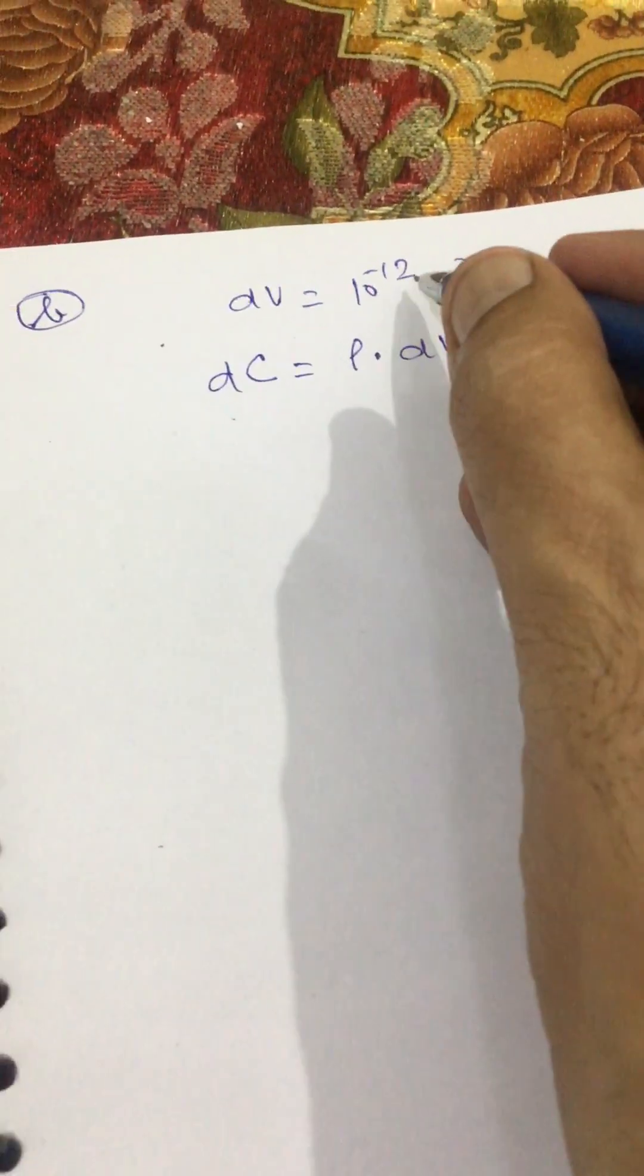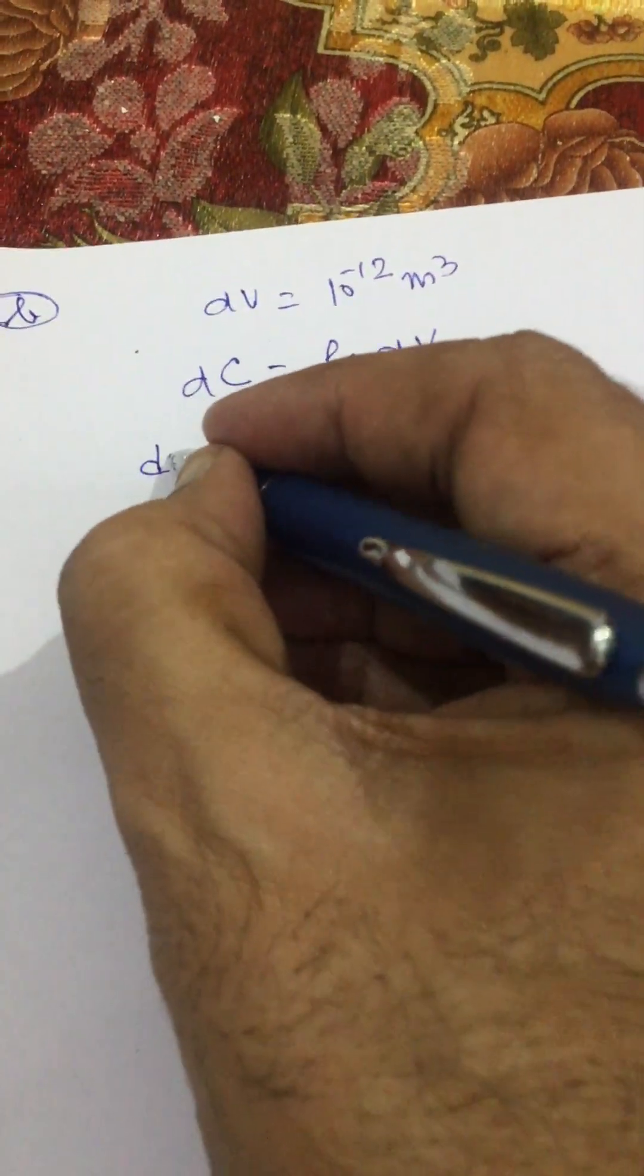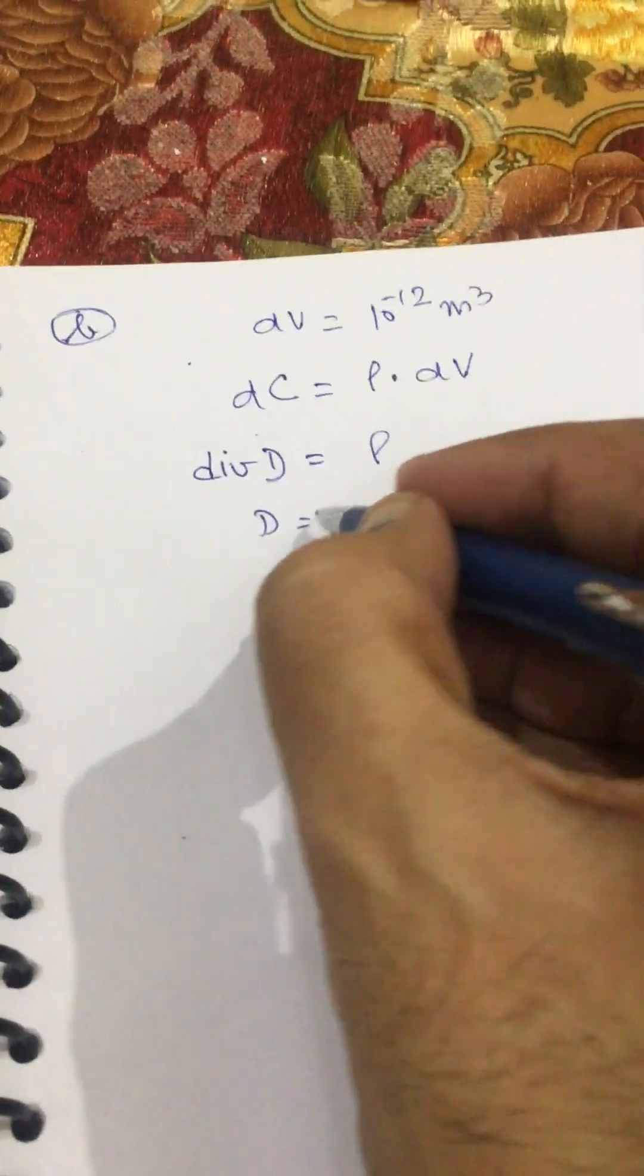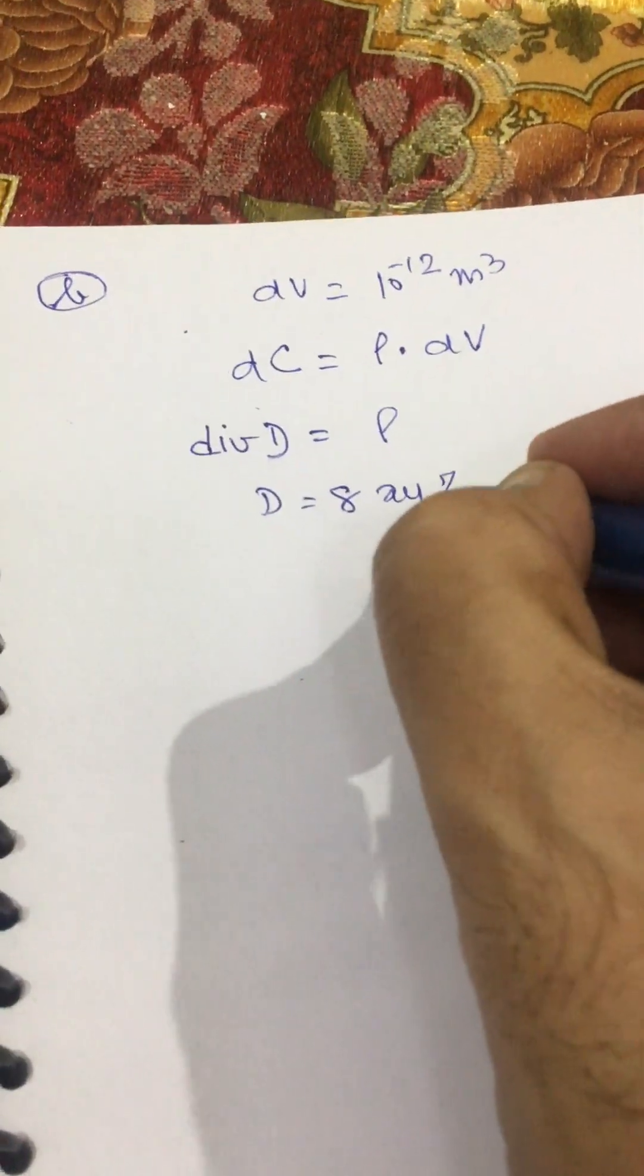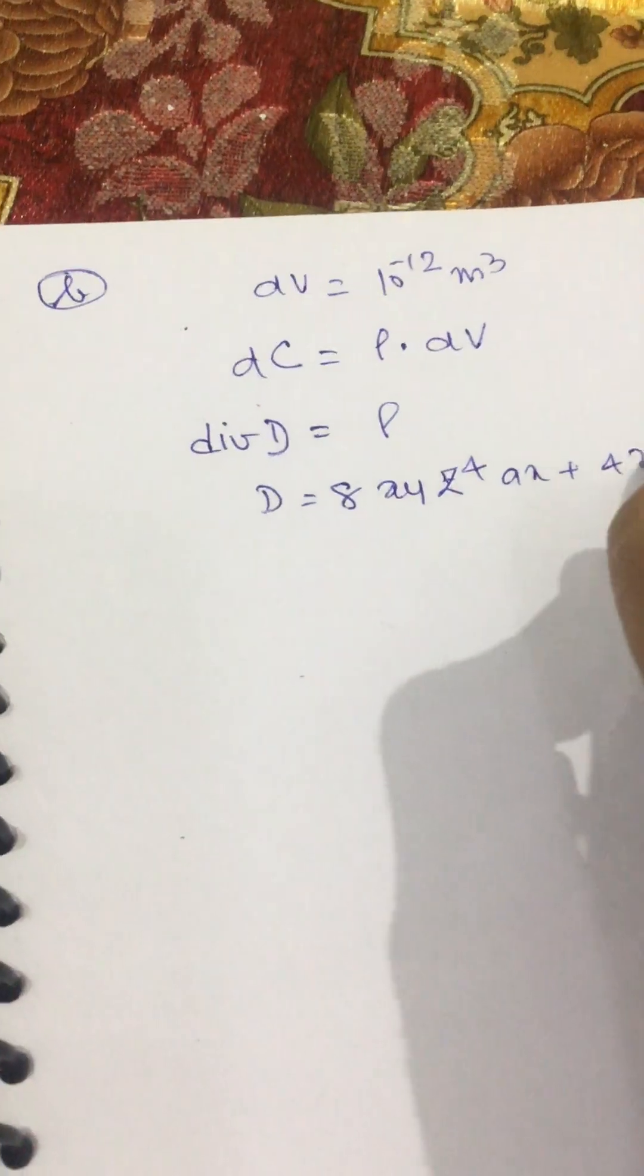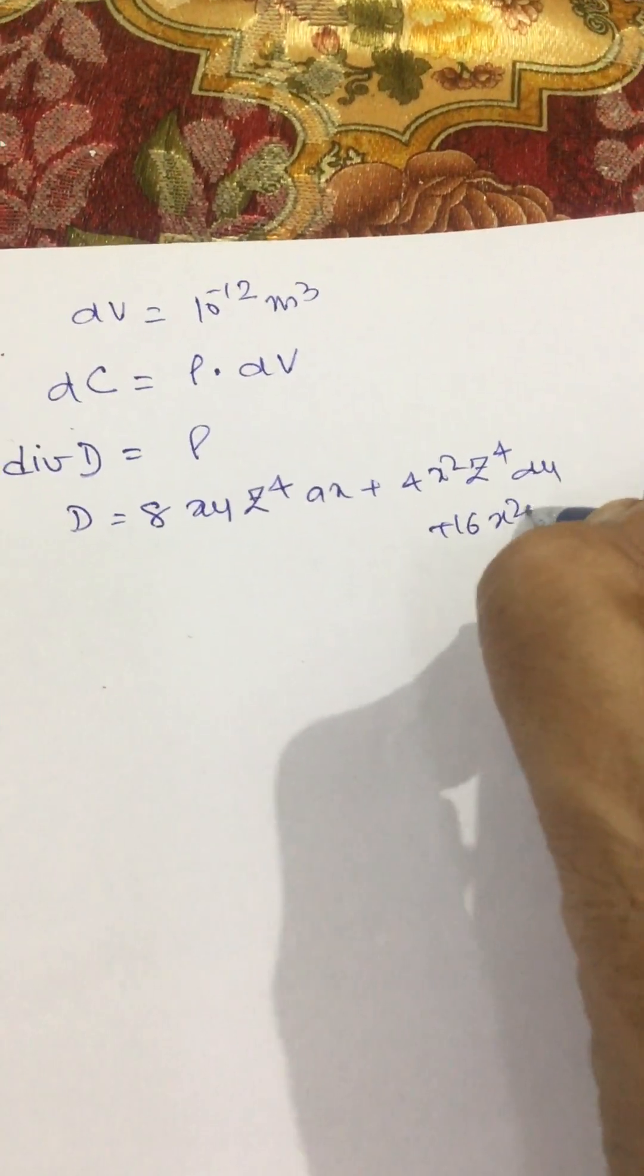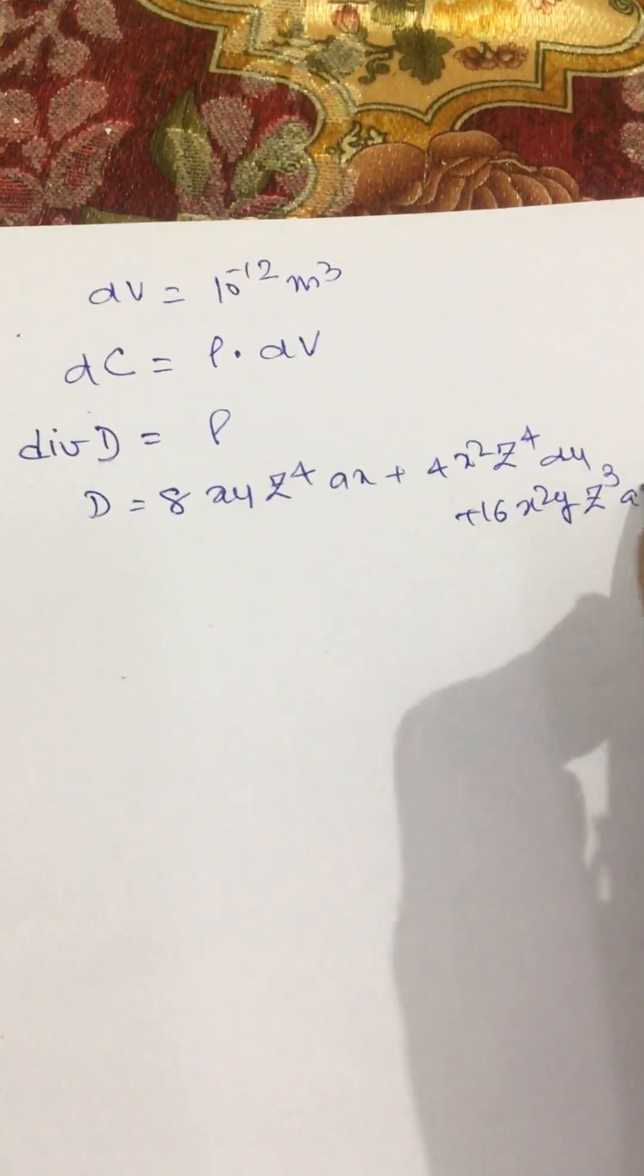So only thing we have to calculate is rho. Divergence of D is rho. And D is 8xyz^4 a_x plus 4x^2z^4 a_y plus 16x^2y/z^2 a_z.